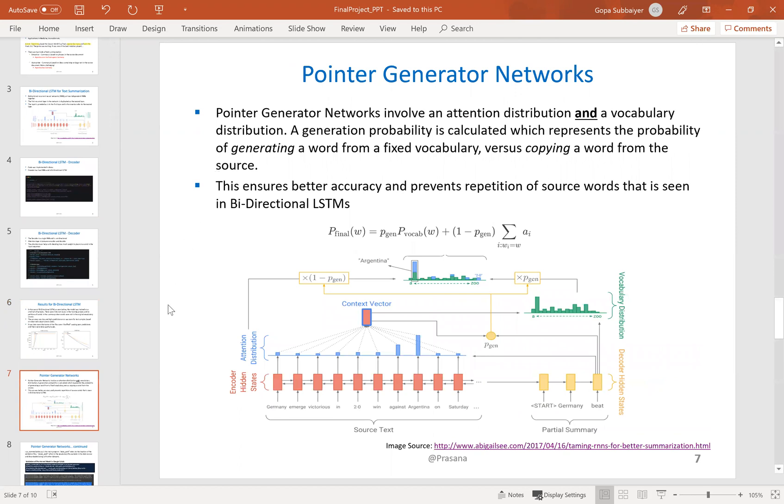The pointer generator network was developed as an improvement over the previous model. Here, we calculate a probability of generation, pgen, which represents the probability of generating a word from the vocabulary versus copying a word from the source text. This adds the penning down feature that we need for abstractive summarization.